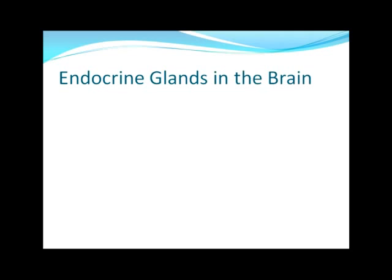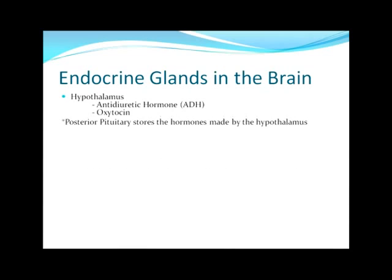Starting with the endocrine glands located in the brain. First is the hypothalamus, which is the connection between the endocrine system and the nervous system. It produces two hormones: antidiuretic hormone, which is involved in water balance and retention and decreases urine output, and oxytocin, which is involved in creating strong uterine contractions for childbirth and milk ejection in lactating women.